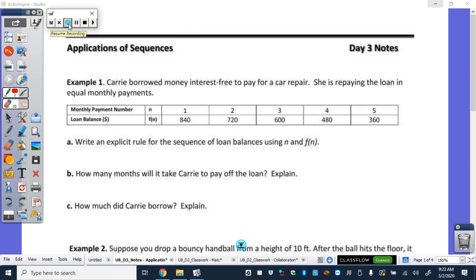We have Carrie has borrowed money interest-free, which is very rare if you can ever borrow money interest-free. So she borrowed money interest-free to pay for a car repair. She is repaying the loan in equal monthly payments. So here is a little table showing how much she borrowed. So she borrowed $840.